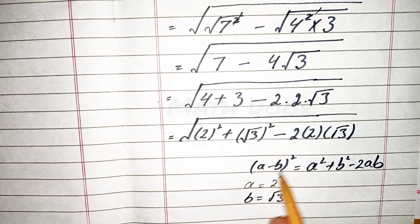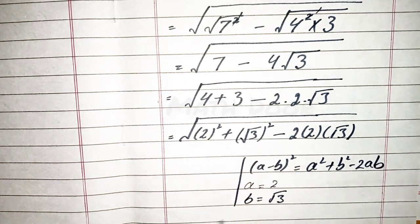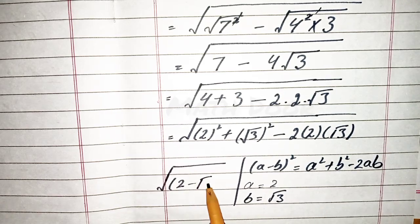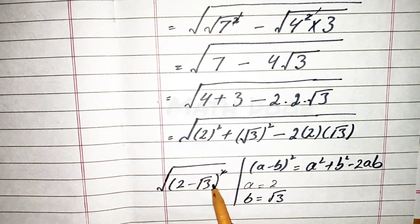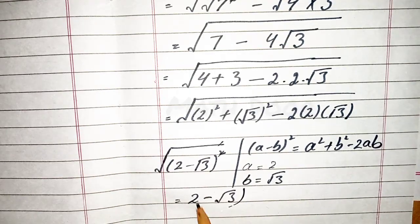We apply this formula, so we write this equation as under root of 2 minus under root 3 whole square. This square will cancel with the square root, so our answer is 2 minus under root 3.